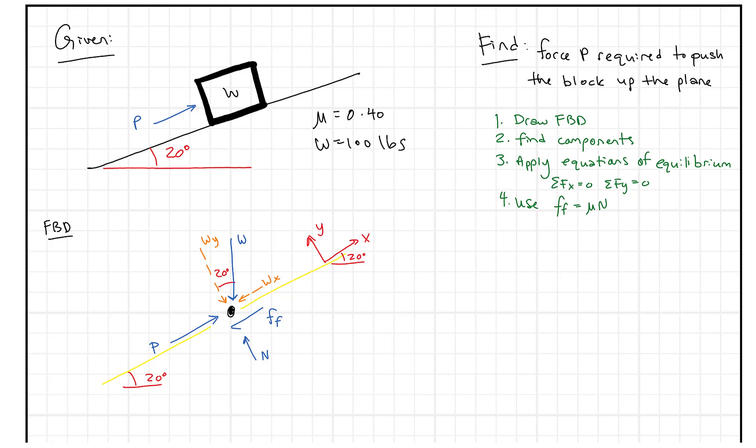Once we've identified that angle, now we can write equations for wx. Well, wx is going to equal W times the sine of 20. wy is going to be W times the cosine of 20. Since we know those, let's go ahead and solve them.